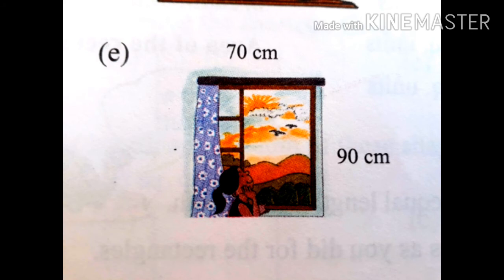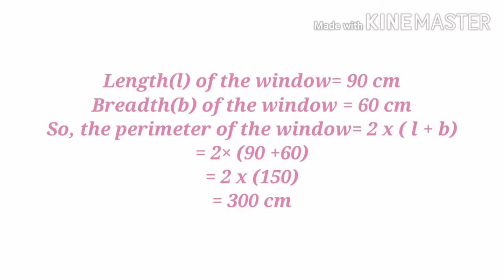The next question is 1b. Here you can see there is a window in the shape of a rectangle having length 90 centimeter and breadth 70 centimeter. We use the same shortcut formula: perimeter = 2 into (L plus B). Substituting L = 90 and B = 60, we get 90 plus 60 equals 150, and multiplying 150 by 2 gives 300.